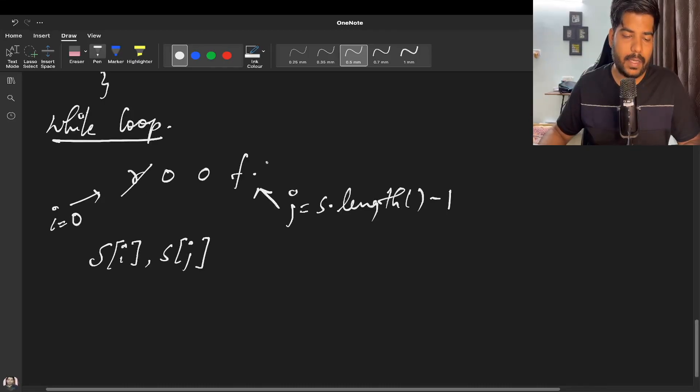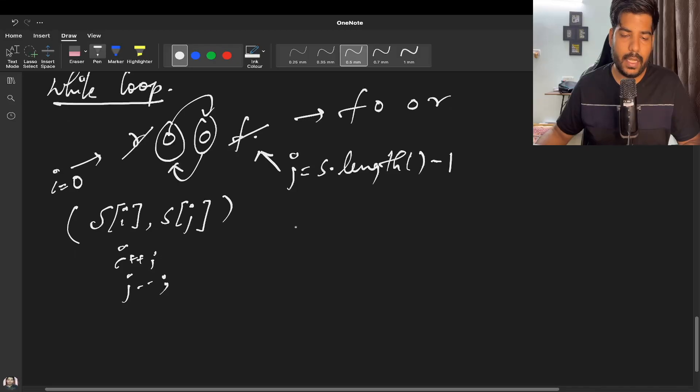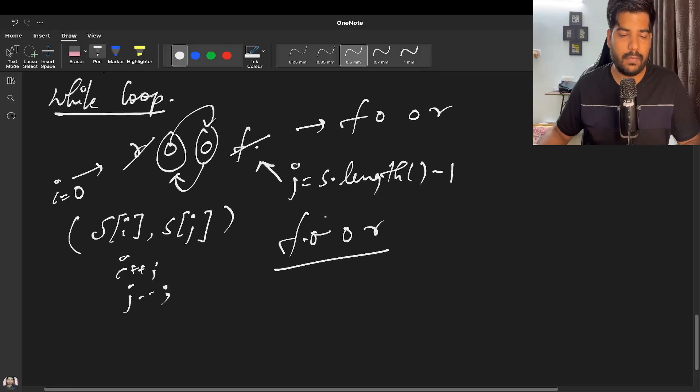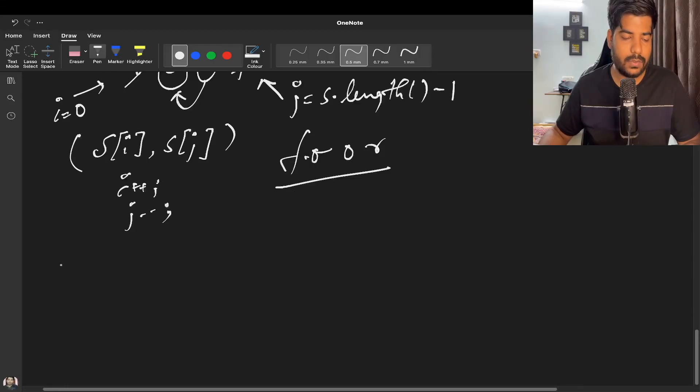R will be replaced with F, so our resultant string will be 'foor'. Now i will be incremented and j will be decremented because we have to take the pair. O will be replaced with O itself, so in the end our string will be 'foor'. This was the second method using a while loop.